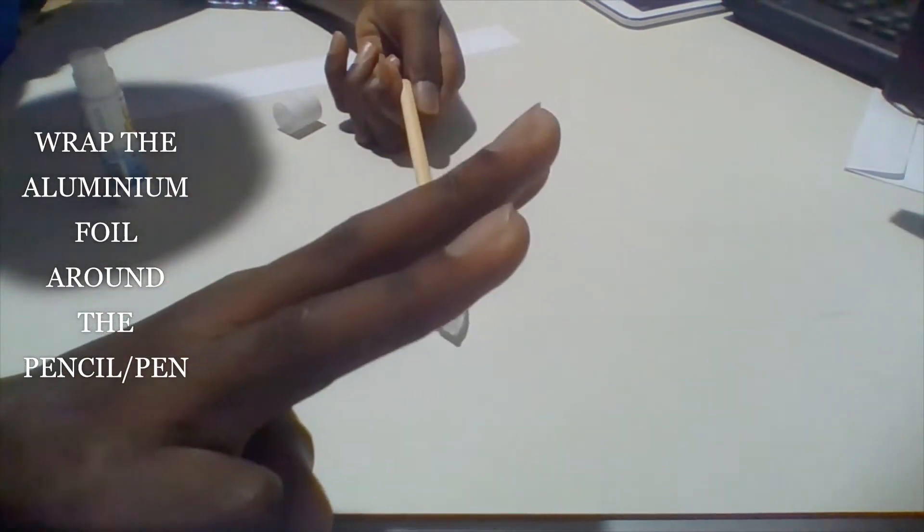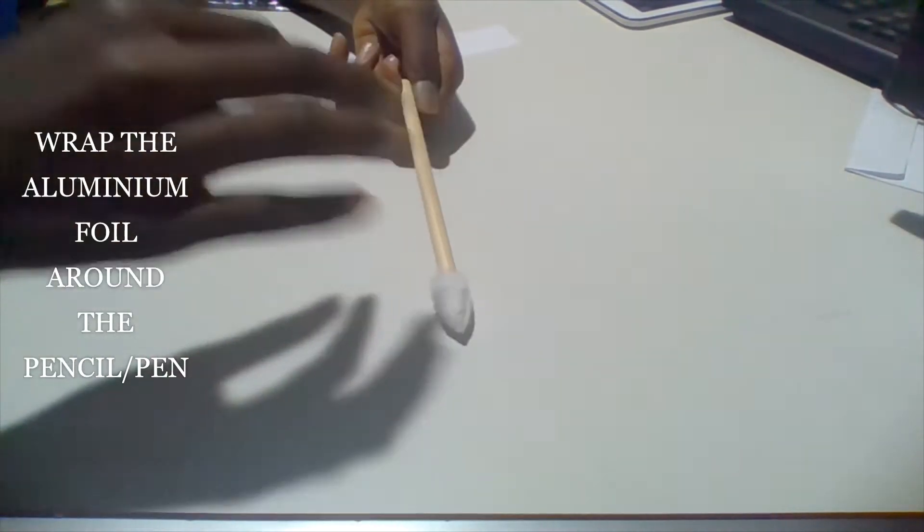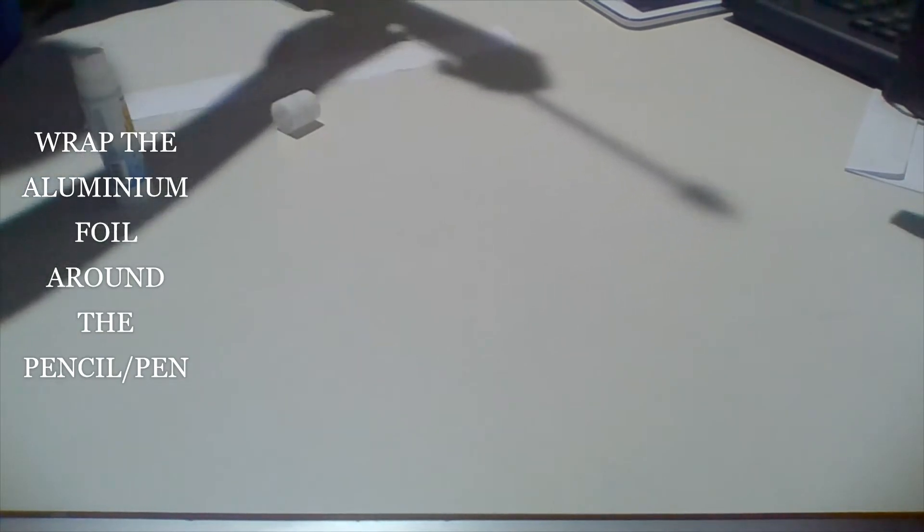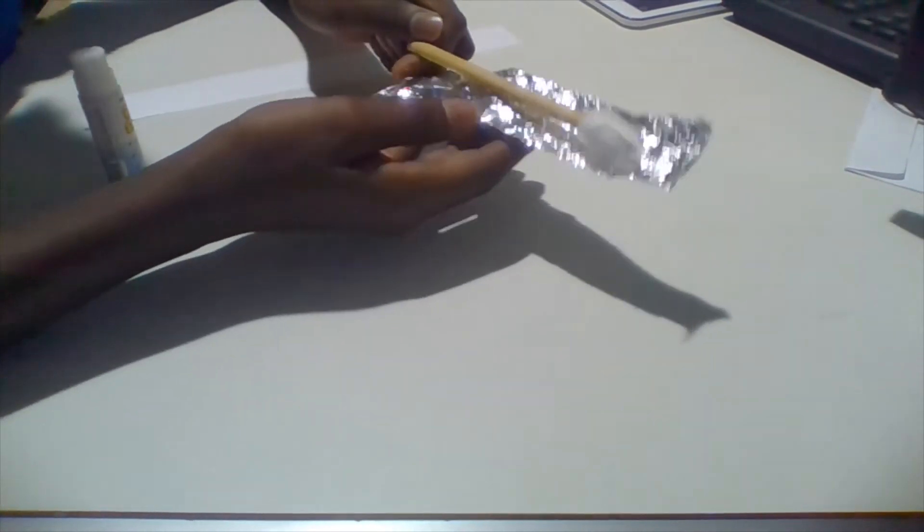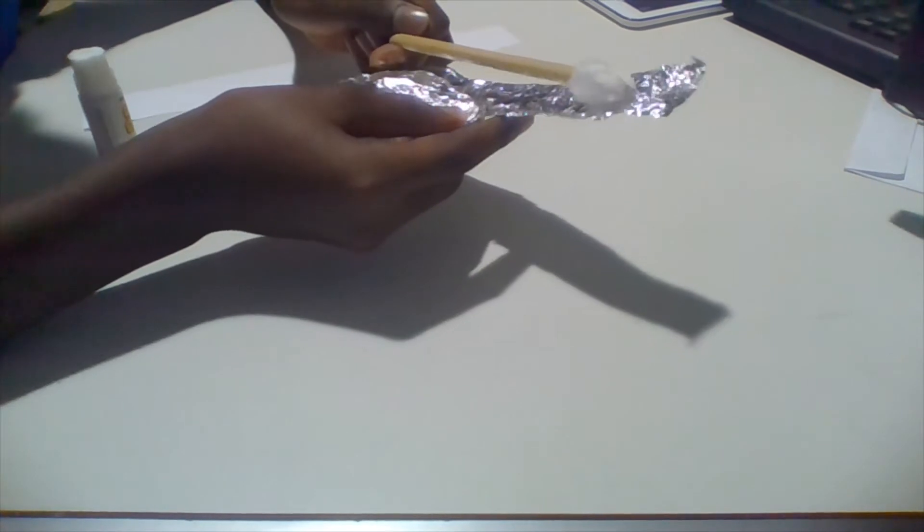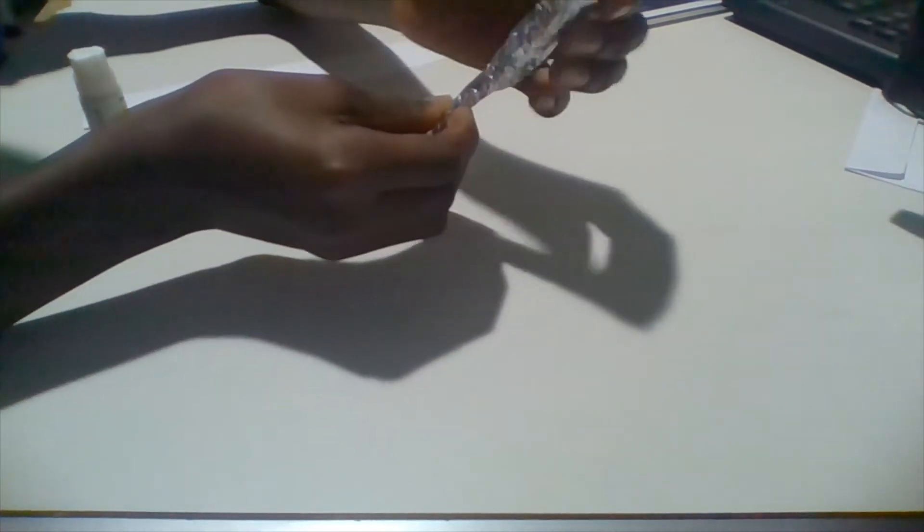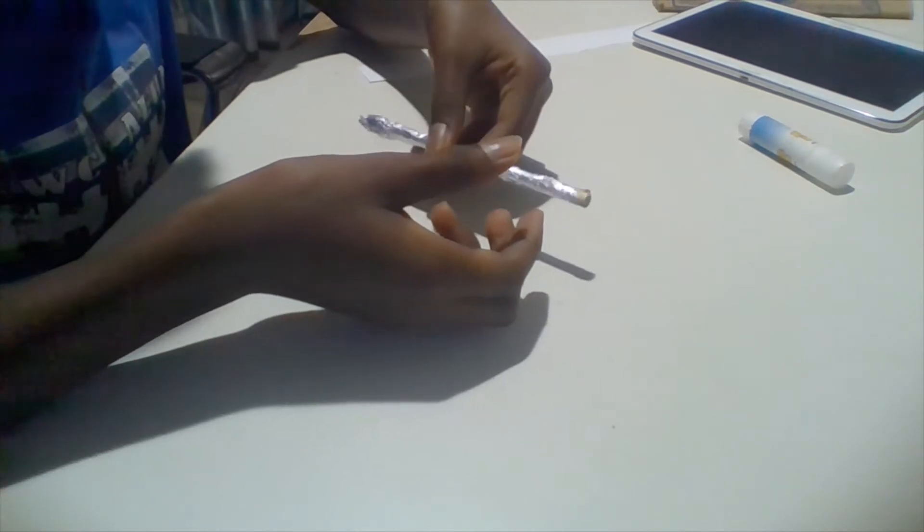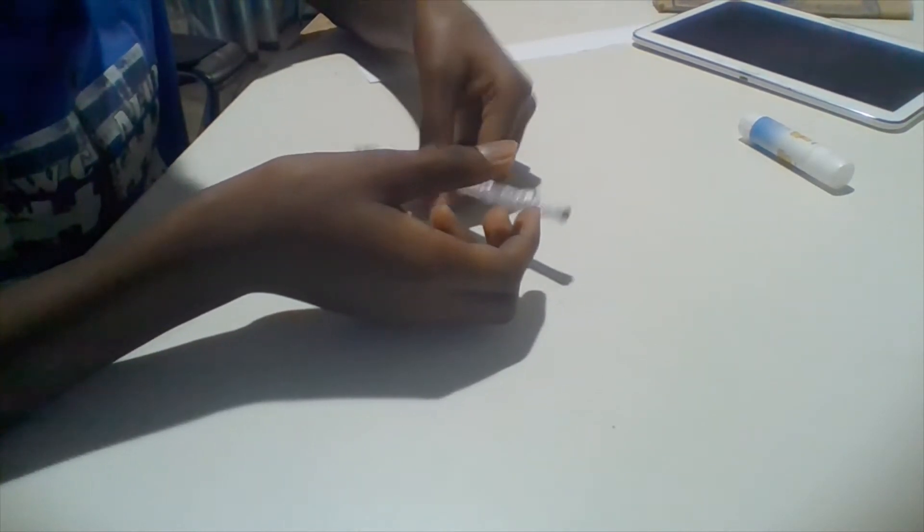The third step obviously will be to wrap the aluminum foil right around the light pen, so exactly what we're doing right now. Just use it to cover up like that, and that is one of the most important things. I'm done wrapping the aluminum foil on this light pen.